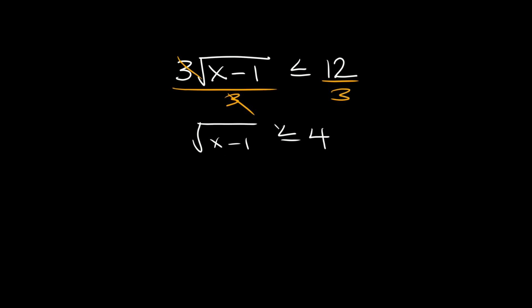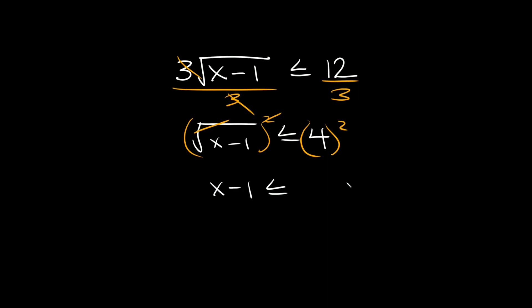Now here we have a square root or radical. In order to get rid of a square root you just have to square it, and what we do to one side we do to the other. The square root and the squared exponent cancel out, so we're left with x minus one is less than or equal to 16. Then we add one to both sides, so we get x is less than or equal to 17.